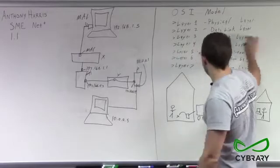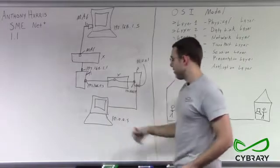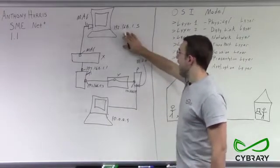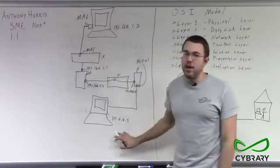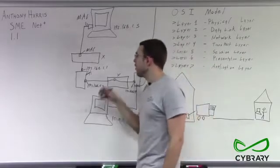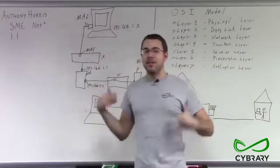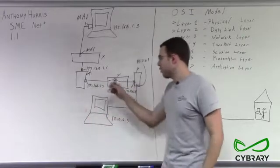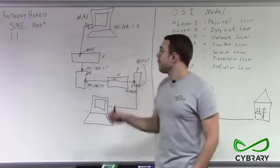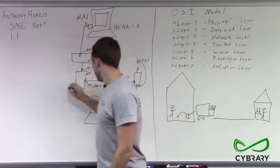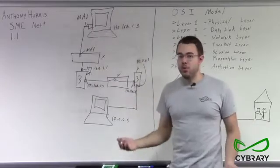Also going on at the same time is our network layer, layer three. Our packets have been formatted with IP addresses — they have IP addresses of where they're trying to go. Ultimately, the packet we're sending from 192.168.1.5 needs to go to 10.0.0.5. We can't reach that computer on just a layer two data link level. We need to actually route this packet through a network layer, sending it through a couple of different routers. Layer three is in play right here as we send our packet through an IP address.